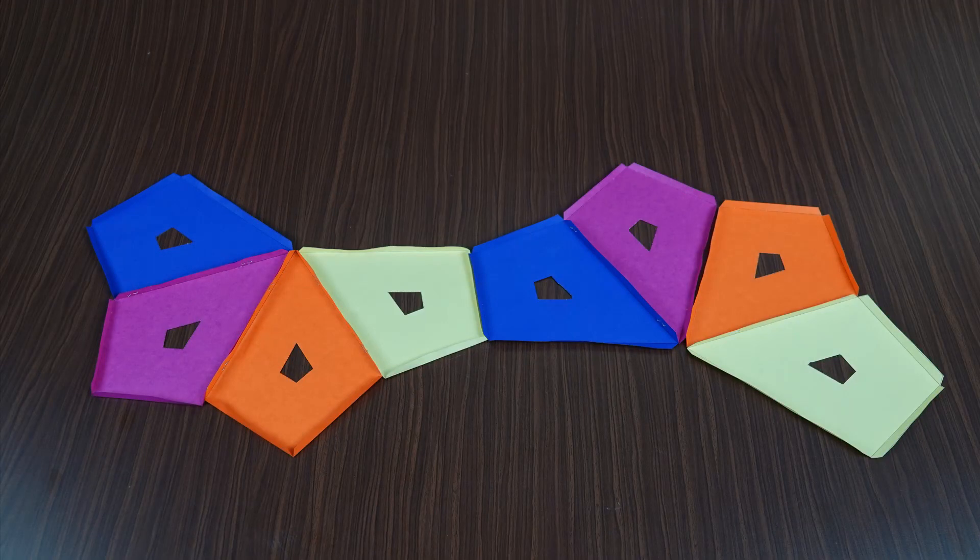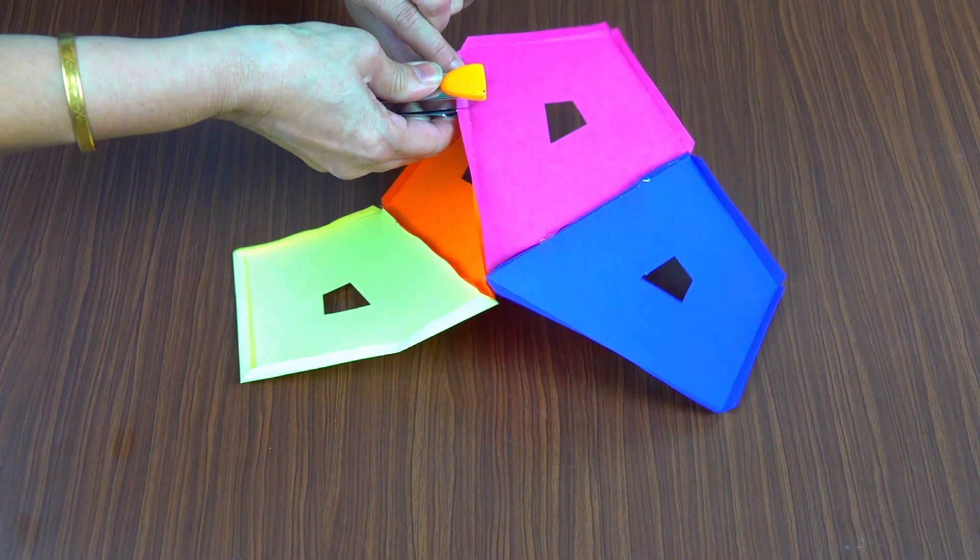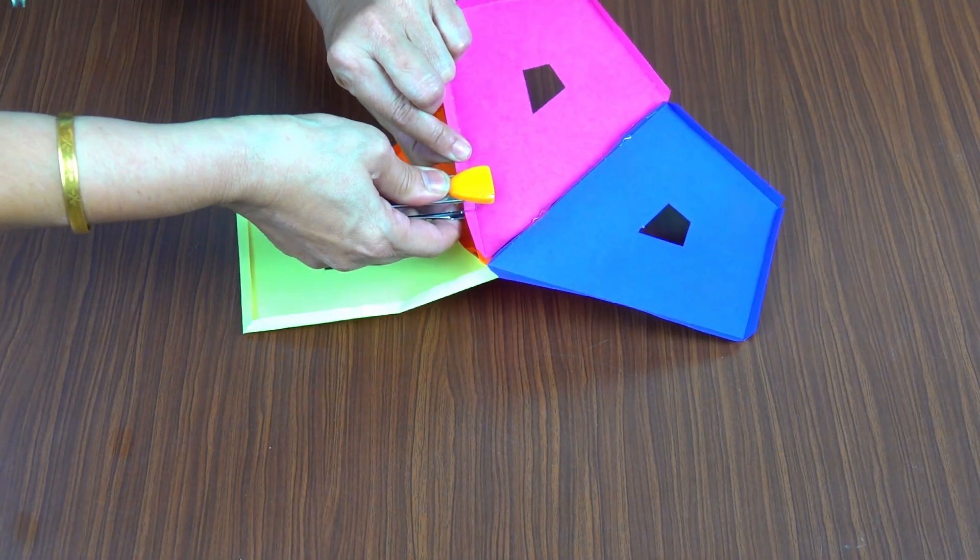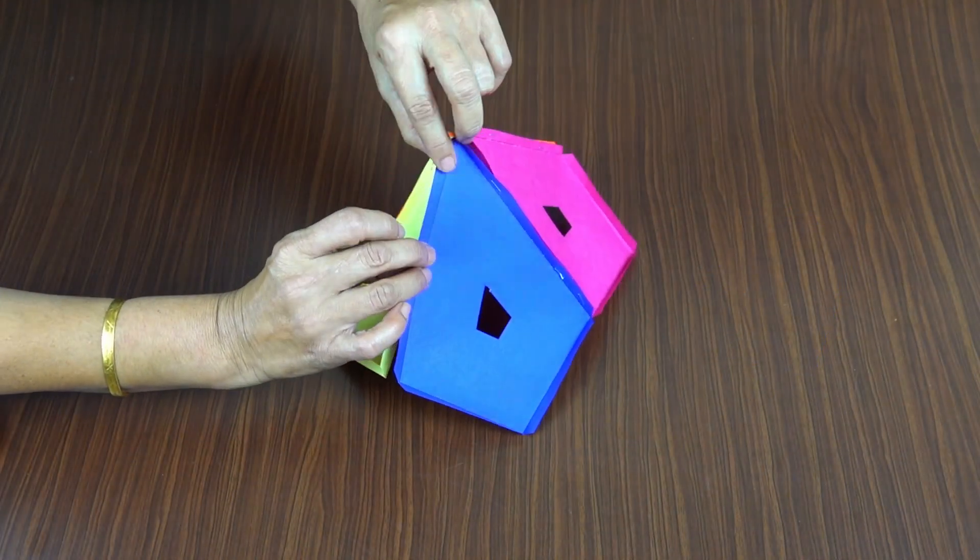Now, fold and connect the edges of each cutout to one another as shown in the video. This will create the structure of your square trapezohedron lantern.